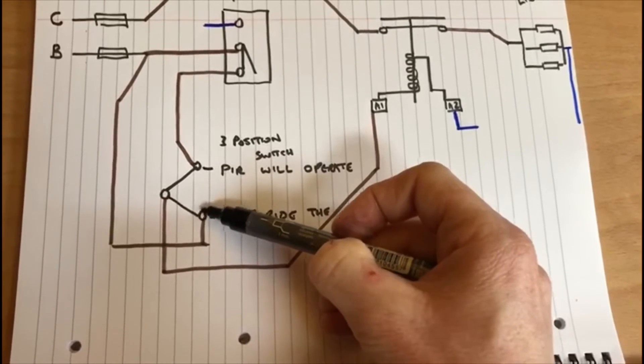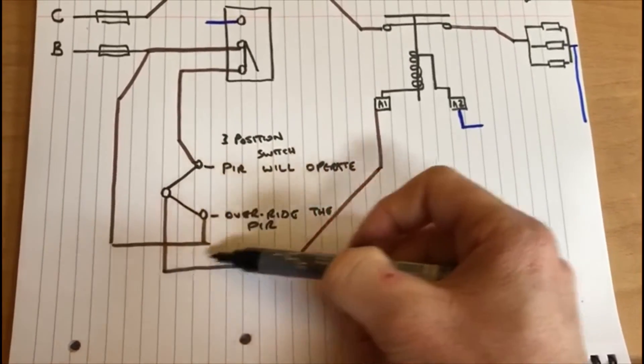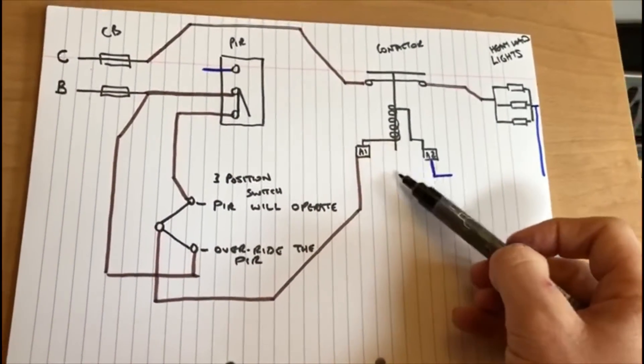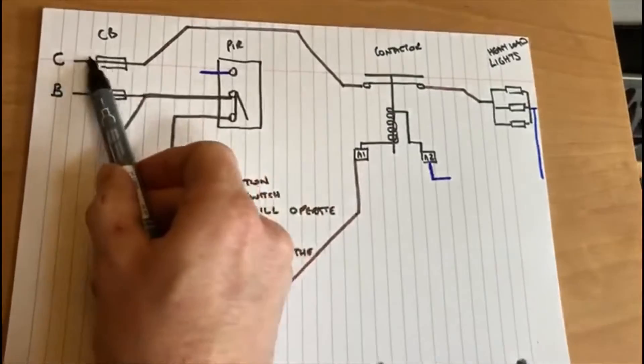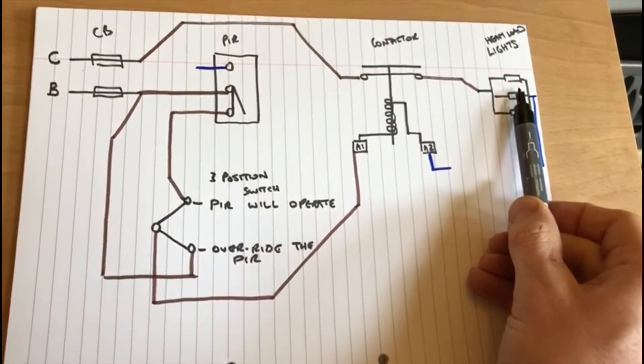And now it's been positioned into here, into this position here, or the switch has now been turned into this position, it then comes through here to the coil, pulls the coil down, and again the circuit is then going through the contactor from the C type breaker and the lights will come on.